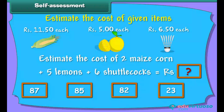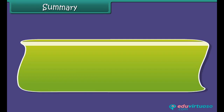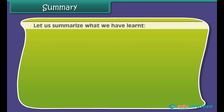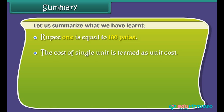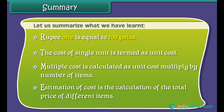Summary: Let us summarize what we have learned. Rupee 1 is equal to 100 paisa. The cost of a single unit is termed as unit cost. Multiple cost is calculated as unit cost multiplied by number of items. Estimation of cost is the calculation of the total price of different items.